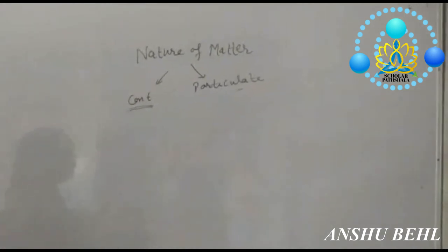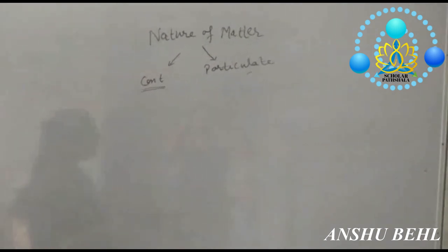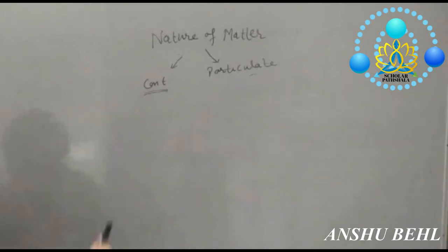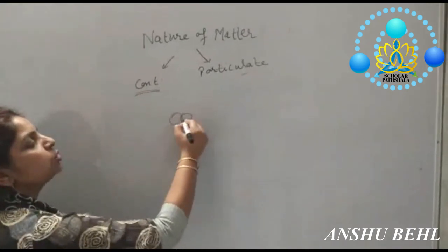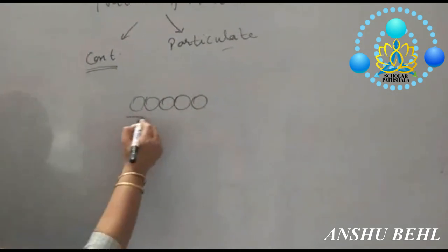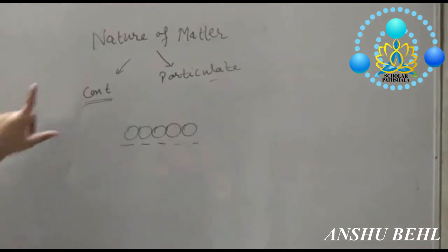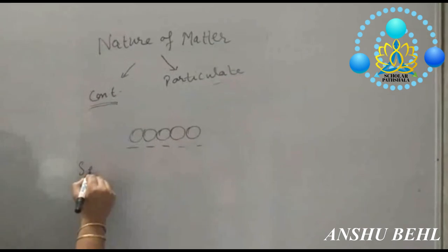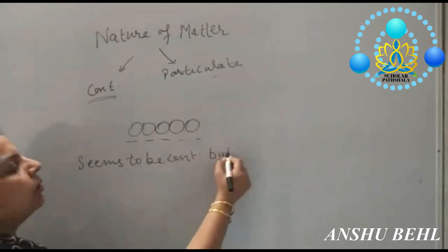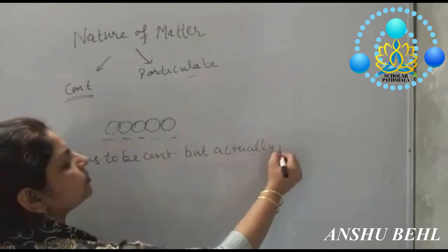But if you take the sheet and throw it down, it breaks into several pieces — it breaks because it is made up of several particles. So what we can say is that matter seems to be continuous when particles are closely placed, but actually it is made up of tiny particles. So its nature is particulate.